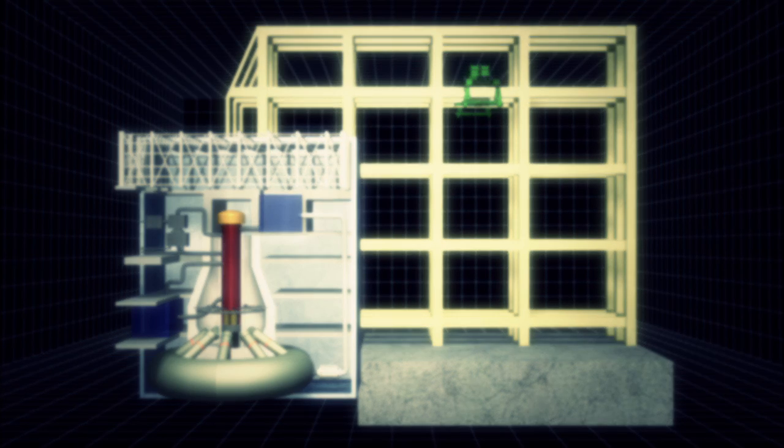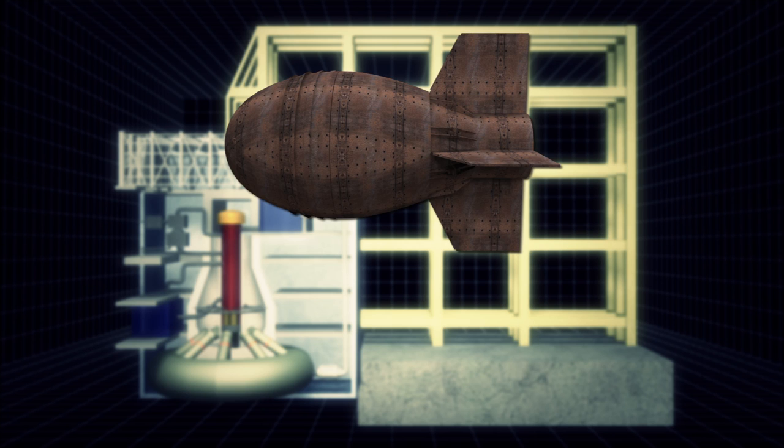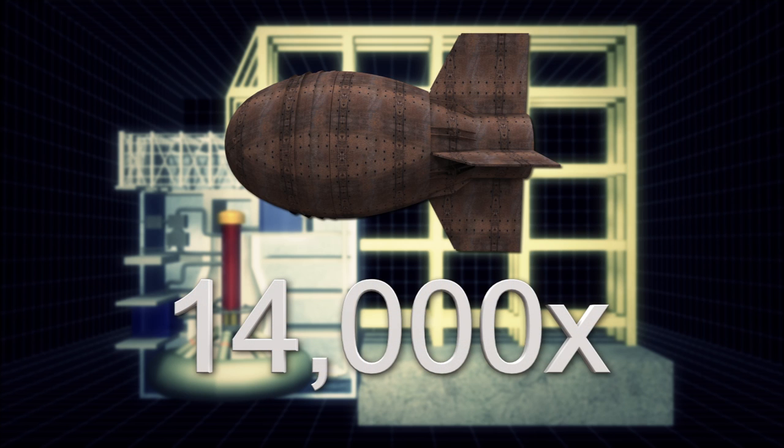Reactor 4 stores over 1,500 nuclear rods. The radiation level is 14,000 times the amount released by the Hiroshima atomic bomb.